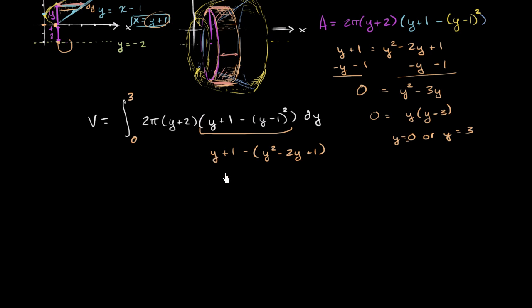And then that would simplify to y plus 1 minus y squared plus 2y minus 1. So this 1 and this negative 1 cancel out. And let's see, you get negative y squared plus 3y. And then we're going to multiply that times y plus 2.